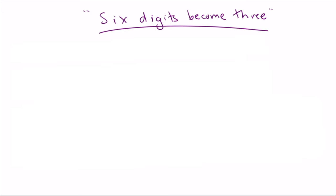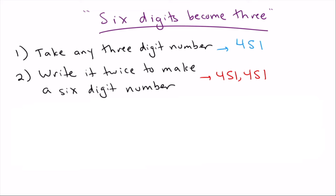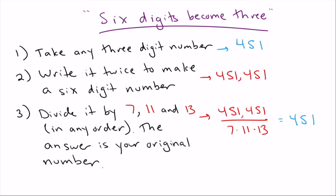Let's go on to the last one. This one I'm calling six digits become three. And I think from the math perspective, this one's the most interesting. So how does this work? Well, you start with any three digit number you want. Unlike the last problem, they don't need to be repeating digits or anything. Pick any three digit number you want. I picked 451, but you can do with anyone. Next, write it twice to make it a six digit number. So I write 451, 451. In other words, 451,451. So now I've got a six digit number.